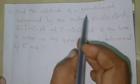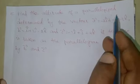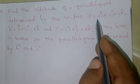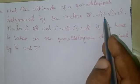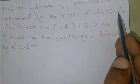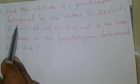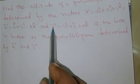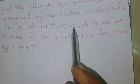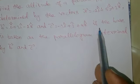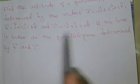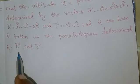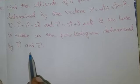Find the altitude of a parallelogram determined by vectors: a = -2i + 5j + 3k, b = i + 3j - 2k, and c = -3i + j + 4k. The base is taken as the parallelogram determined by b vector and c vector.